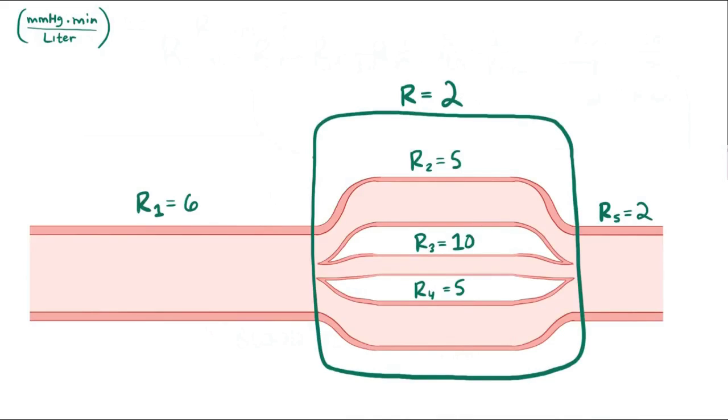Now that we have the combined resistance of the parallel guys, the remaining three components are just in series, so we add up 6 plus 2 plus 2, and that's 10, or 10 millimeters of mercury times minutes over liters. And this happens to be around the actual resistance you see in the entire systemic circulation.